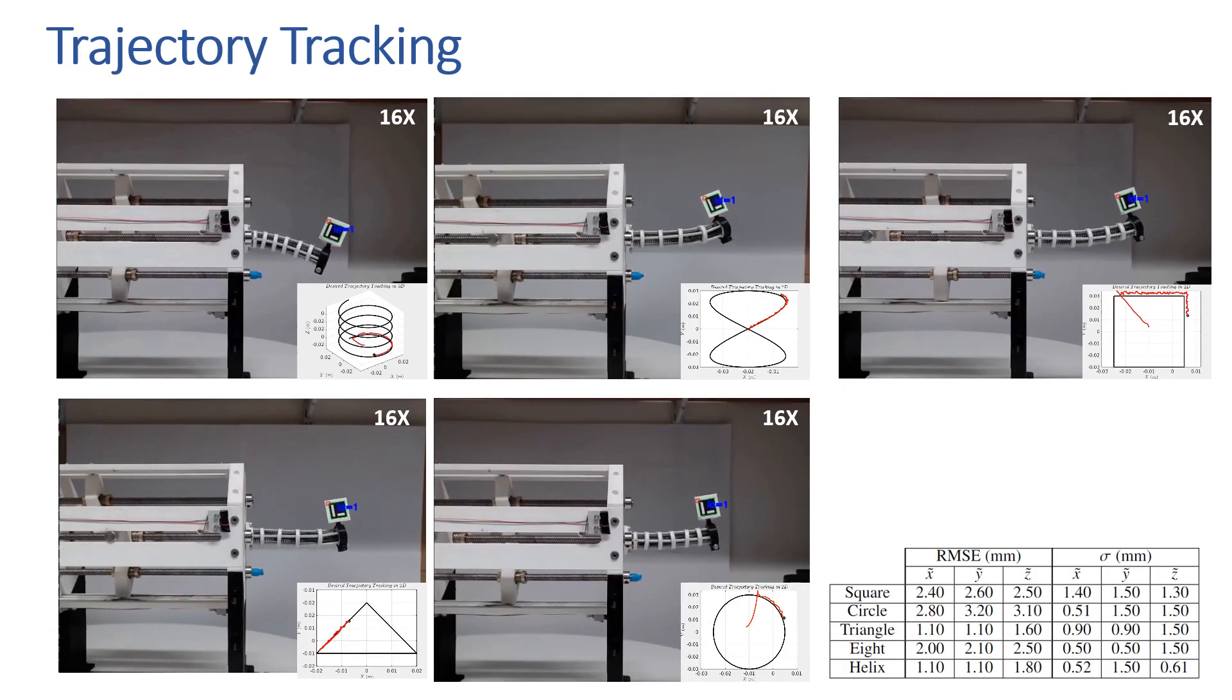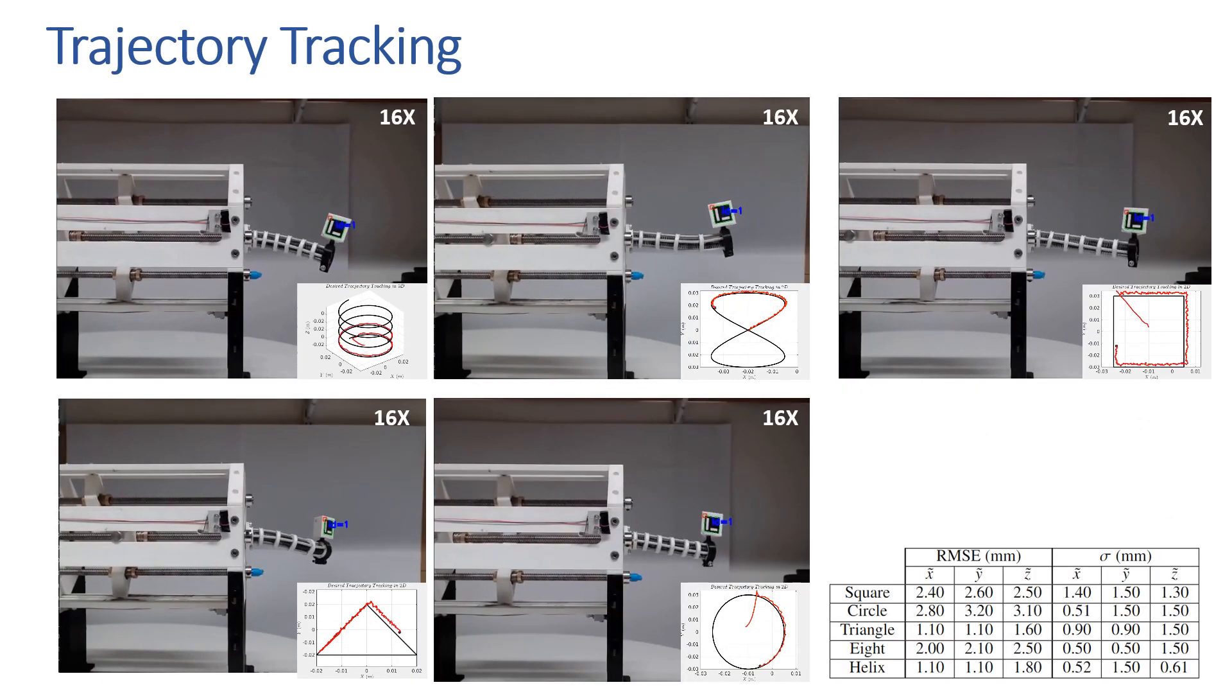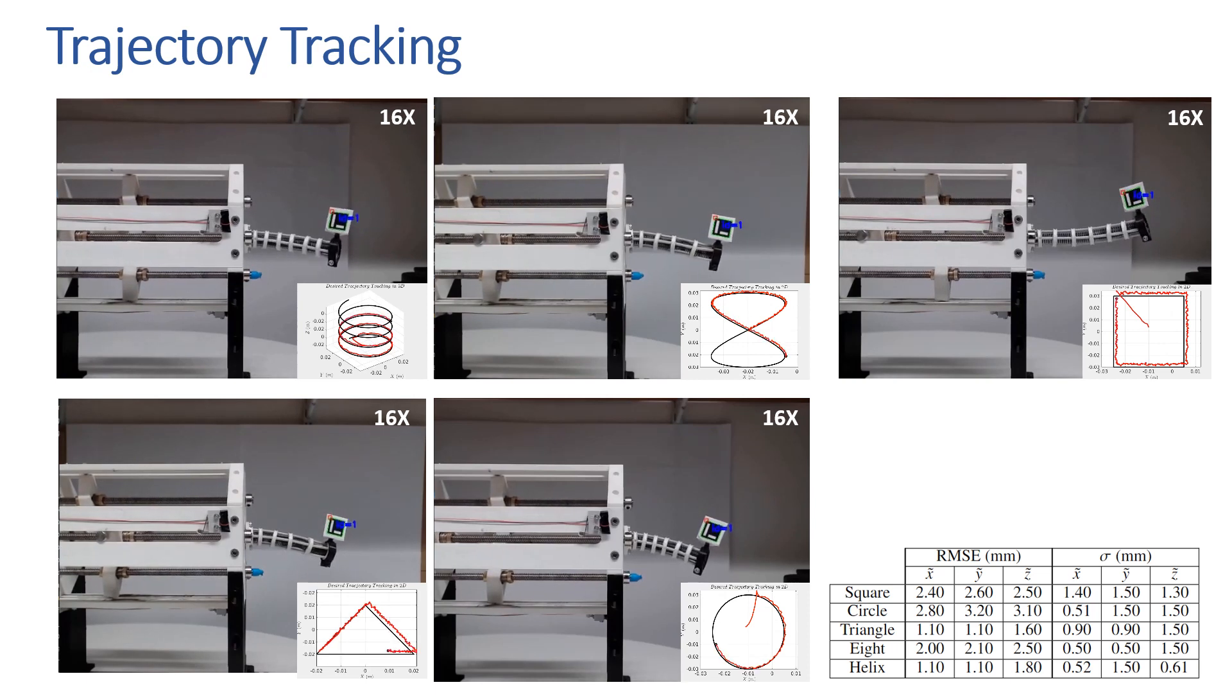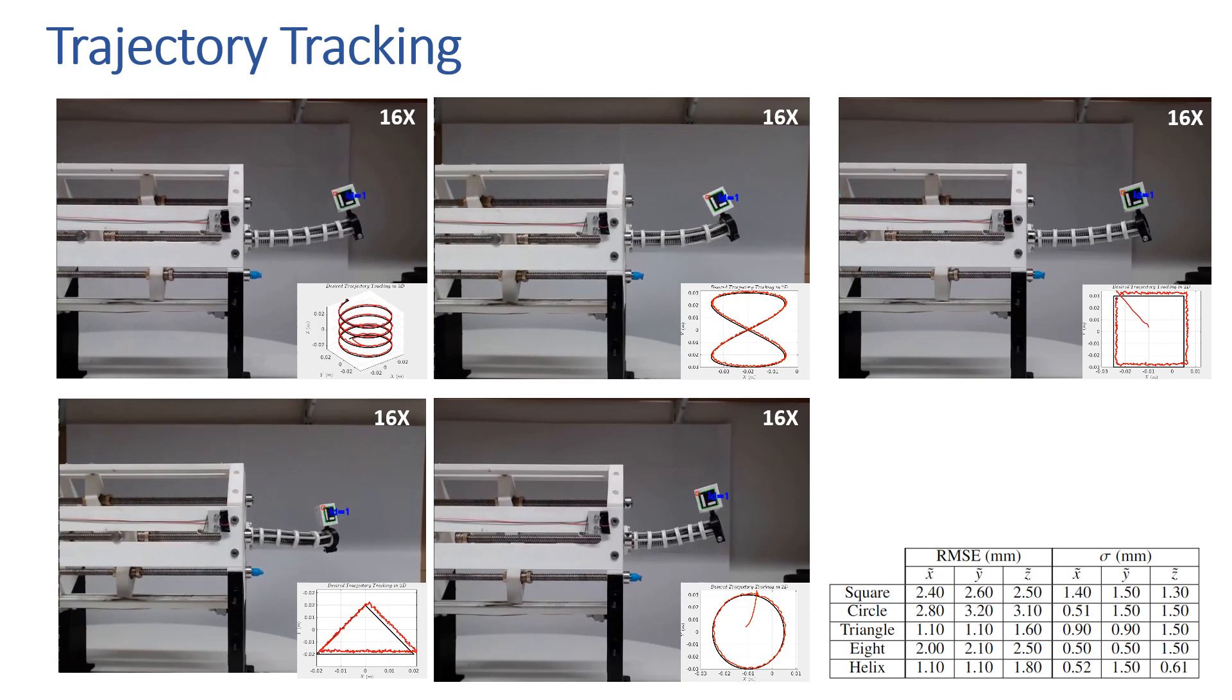In the next experiment, the robot is set to follow several trajectories. The root mean squared error and standard deviation of error across five trials are calculated and presented in the table.